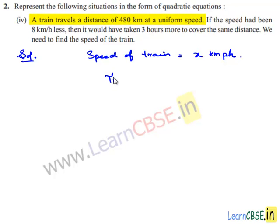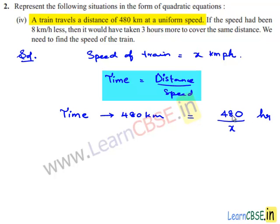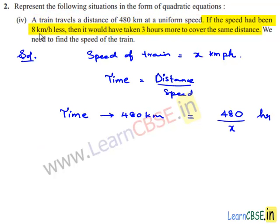We know that time equals distance divided by speed. Therefore, the time taken to complete a distance of 480 kilometers is 480 divided by x hours. Now, the speed is reduced by 8 kilometers per hour, so the new speed becomes x minus 8 kilometers per hour.